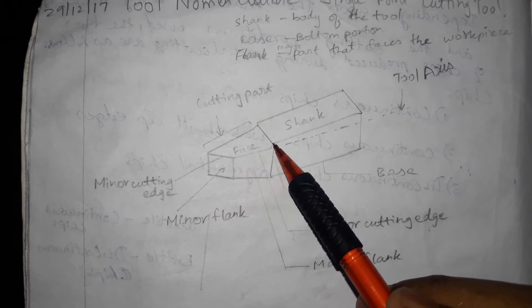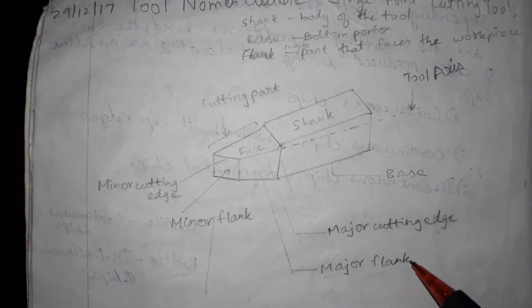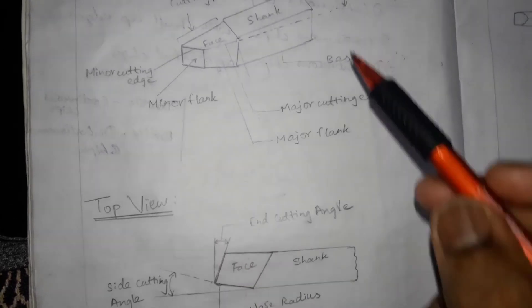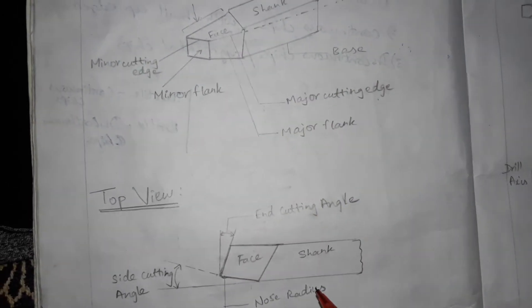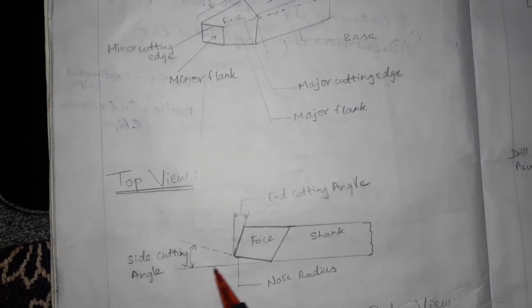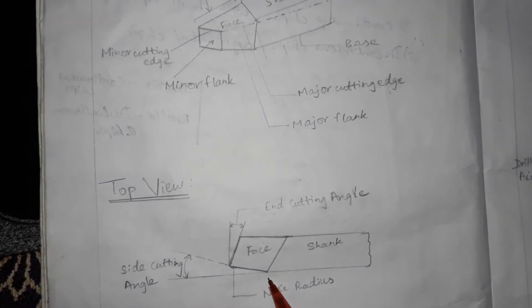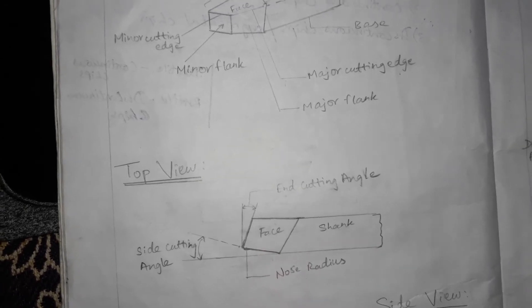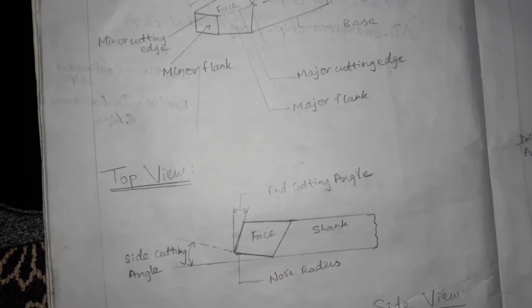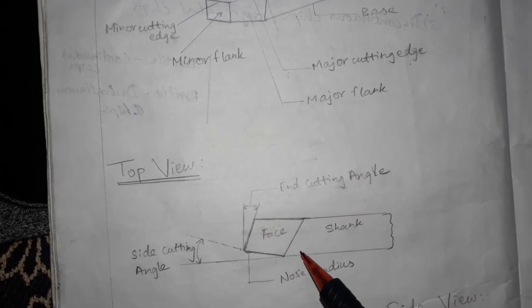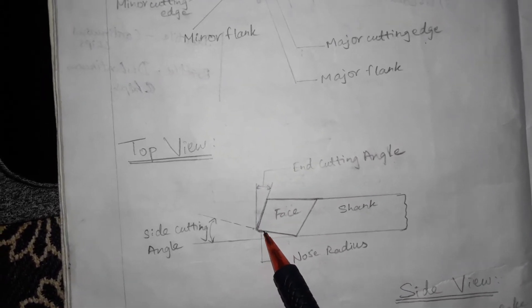This shows the major cutting edge and the major flank. This is the top view of the single point cutting tool. This is the face as seen from above, and this is the shank. The side cutting angle is the angle between the base of the single point cutting tool and the face. The end cutting angle is the angle between the face and the normal to the base. This is the nose radius.